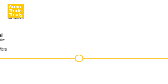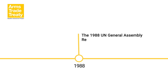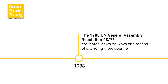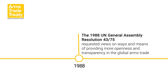The culmination of these efforts was the 1988 General Assembly Resolution 43/75, which requested that the Secretary-General gather states' views on ways and means of providing for more openness and transparency with regard to worldwide arms transfers, and establish a group of government experts, or GGE, to conduct a study on ways and means of promoting transparency in international transfers of conventional arms on a universal and non-discriminatory basis.